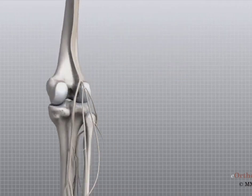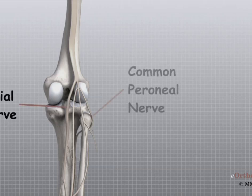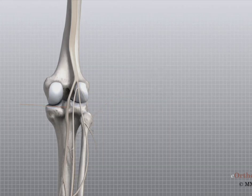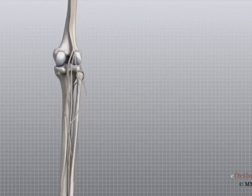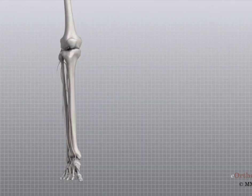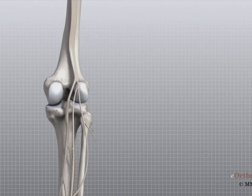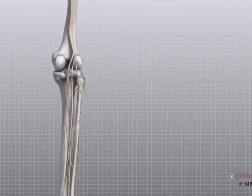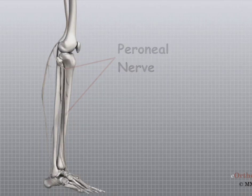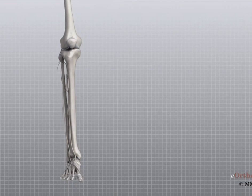The most important nerves around the knee are the tibial nerve and the common peroneal nerve in the back of the knee. These two nerves travel to the lower leg and foot, supplying sensation and muscle control. The large sciatic nerve splits just above the knee to form the tibial nerve and the common peroneal nerve. The tibial nerve continues down the back of the leg, while the common peroneal nerve travels around the outside of the knee and down the front of the leg to the foot. Both of these nerves can be damaged by injuries around the knee.